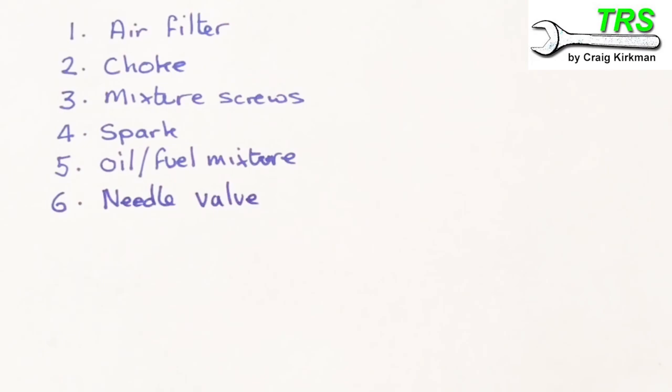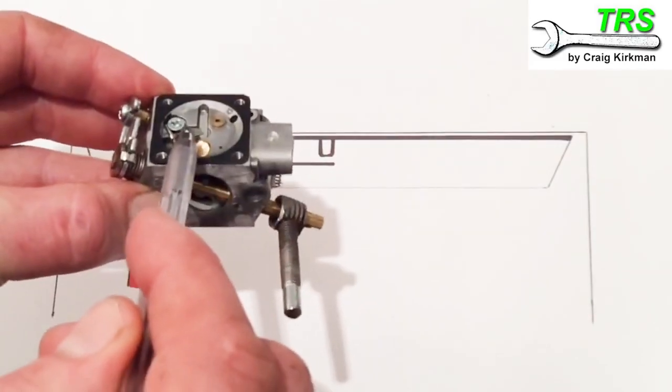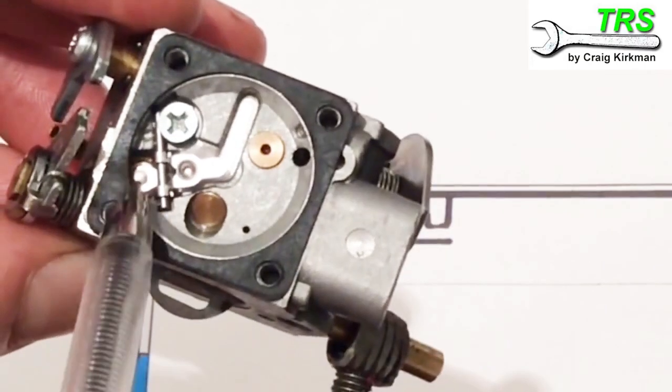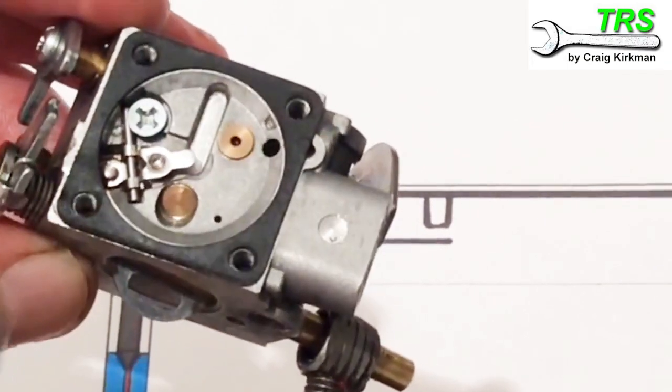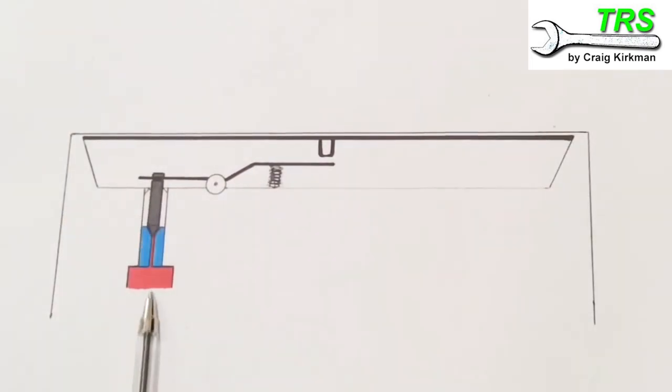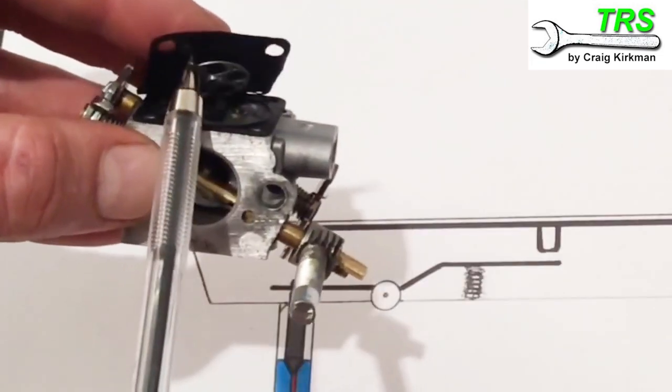And number six, needle valve. So if we could have x-ray vision and look down there at the needle valve, we'd see this. We'd see the lever, the spring. And this is the needle there that can move up and down. And that goes downwards like that and sits on its seat. The fuel comes up this way.